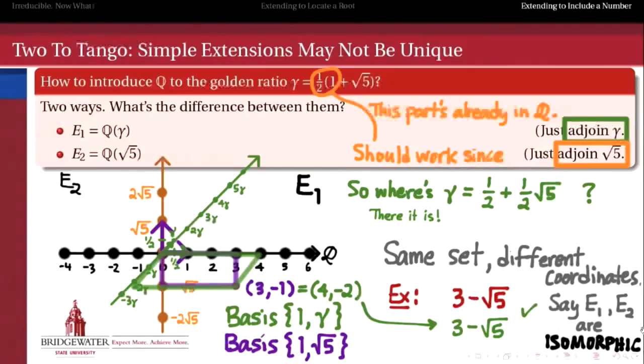But it's one coordinate basis and another coordinate basis on the same set. So we can think of the sets as being the same, as long as we remember that they might have a different coordinate system on them, if we choose to adjoin a different element, like gamma versus the square root of 5. So the news is not all that bad. That simple extensions are uniquely defined, but only up to a choice of coordinate basis, only up to a choice of isomorphism.